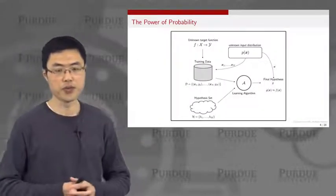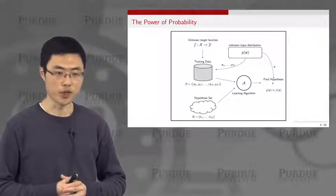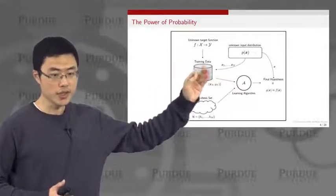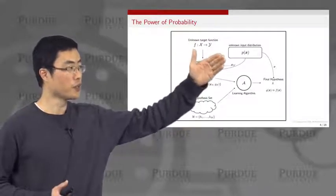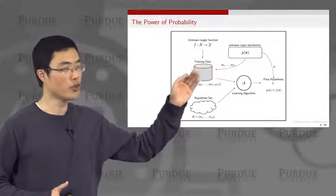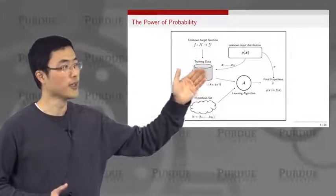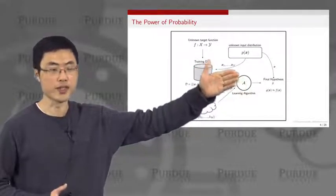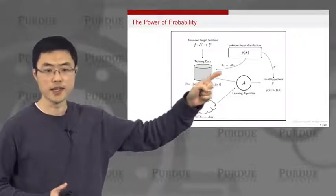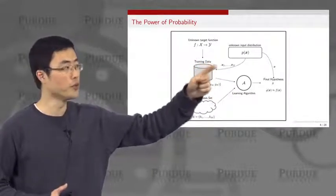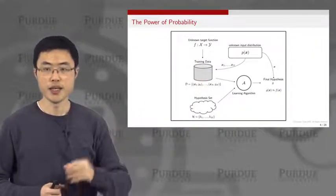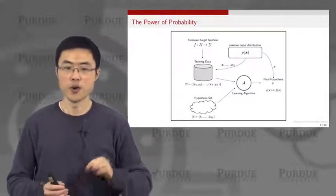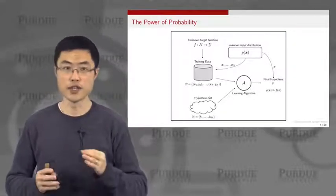This is a typical diagram for understanding the learning model. There is a training data set that comes from a distribution called P(X). This P(X) draws samples to generate the training data set, and also generates samples for evaluating the final hypothesis on testing samples. If there is absolutely no correlation between the training and testing samples, then learning is not feasible. But because of the presence of this shared distribution P, learning is actually feasible.